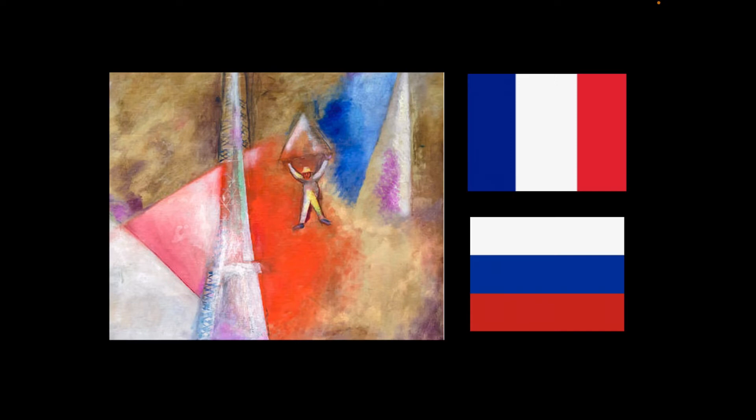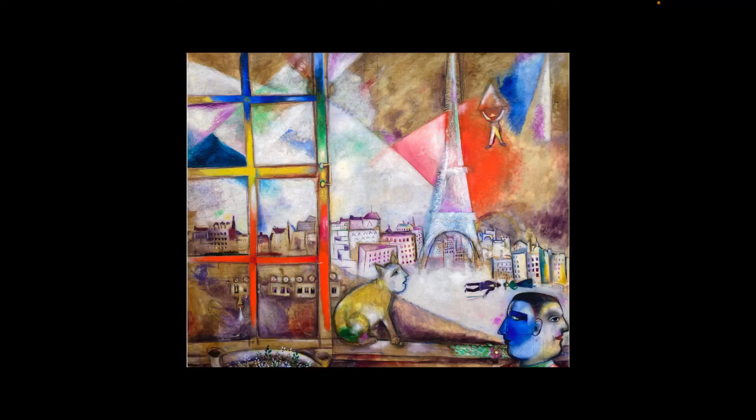Both flags are a combination of blue, white, and red — the top one is French and the bottom one is the flag of Russia. So this is actually a painting that combines the new cubism and a new sort of surrealism style with Chagall's personal experience.